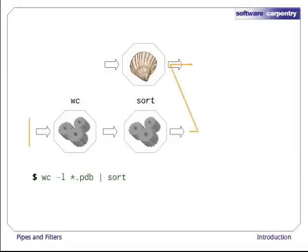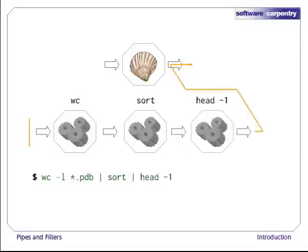For example, if we run wc -l *.pdb > lengths, the shell starts by telling the computer to create a new process to run the wc program. Since we've provided some file names as arguments, wc reads from them instead of from standard input. And since we've used > to redirect output to a file, the shell connects the process's standard output to that file. When we run wc -l *.pdb | sort instead, the shell creates two processes, one for each component of the pipe, so that wc and sort run simultaneously. The standard output of wc is fed directly to the standard input of sort.